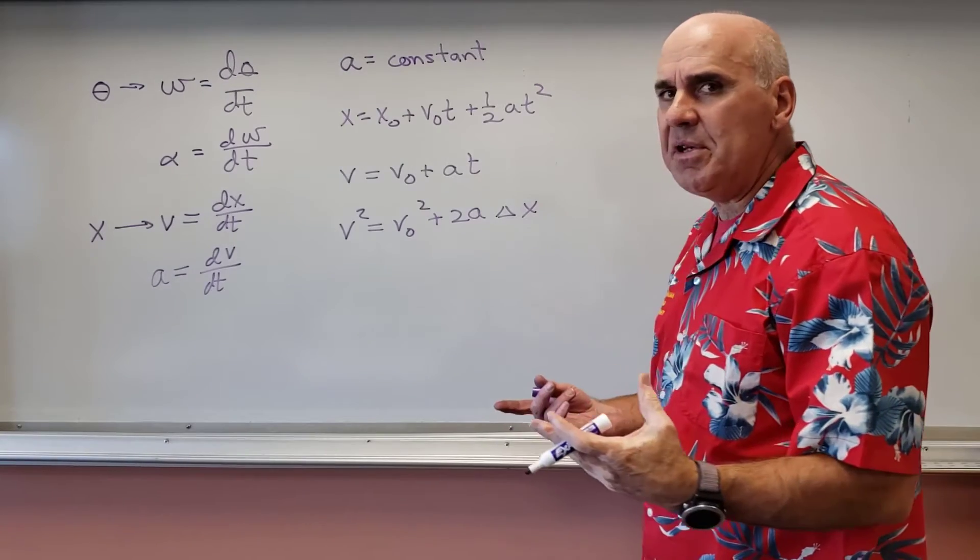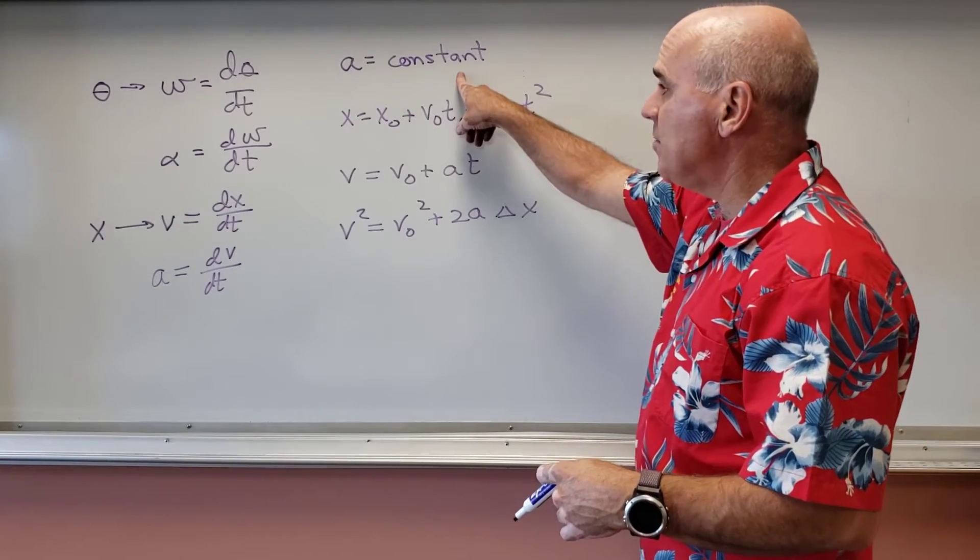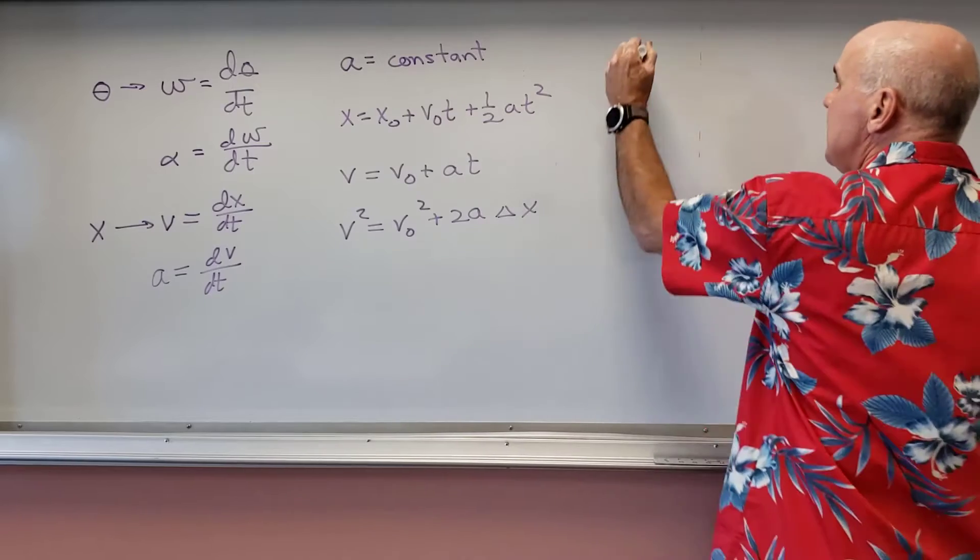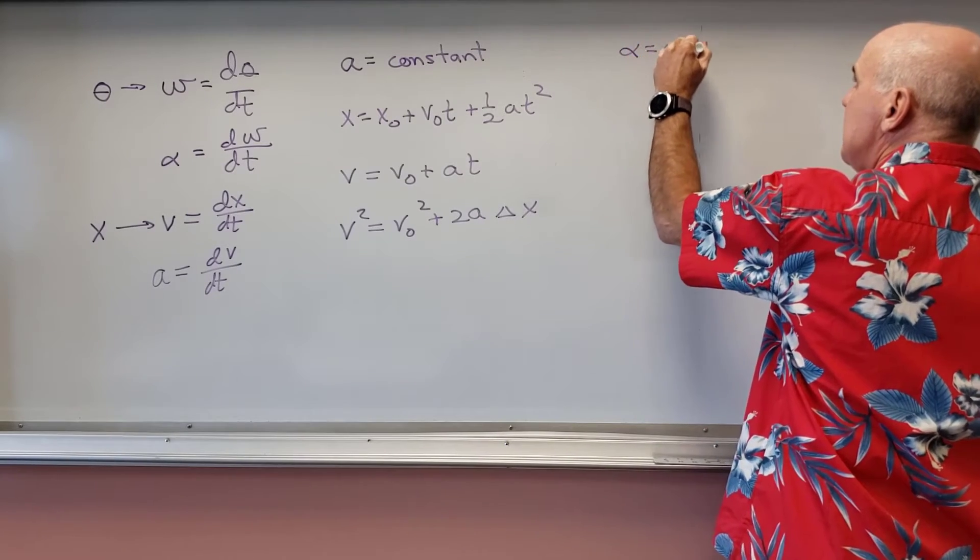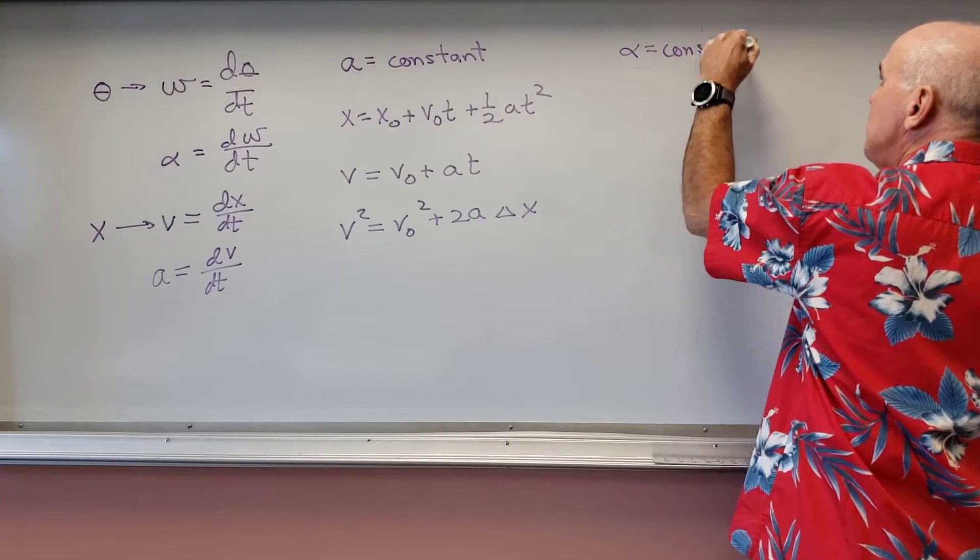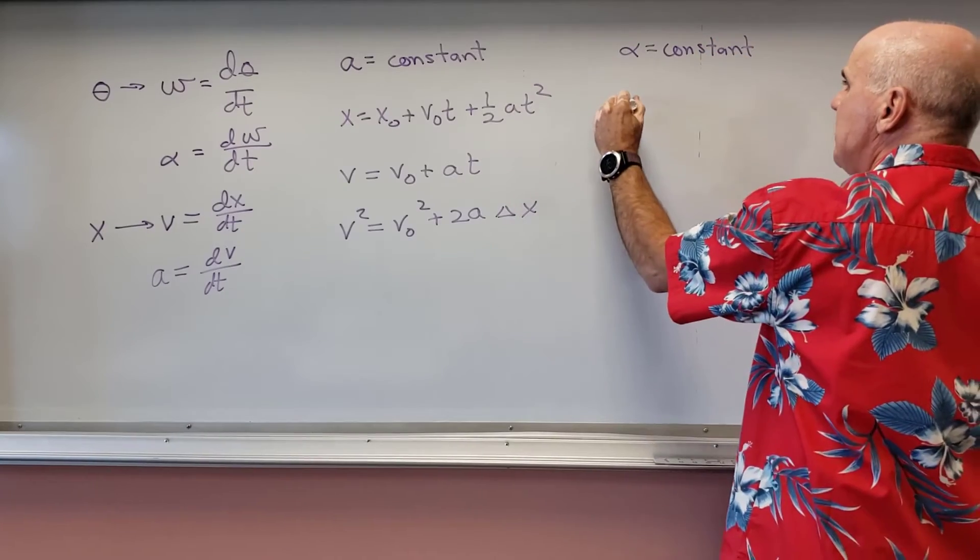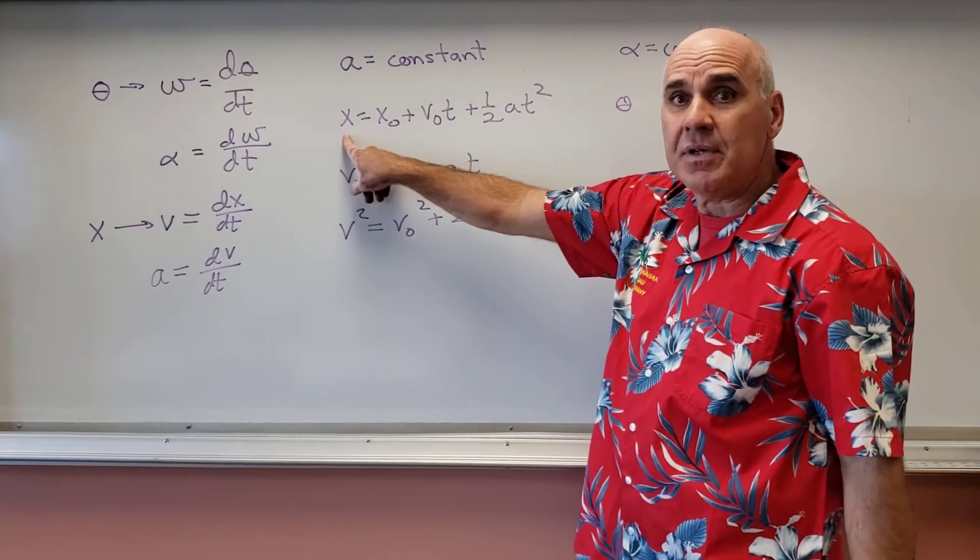And we had v squared equals v0 squared plus 2a delta x. All of those coming from, and there are others, but all of these coming from the fact that acceleration was constant. Well, if alpha is equal to a constant, then I should have similar equations. And those equations would be things like theta, because that's the counterpart to x, right?